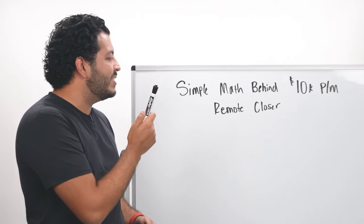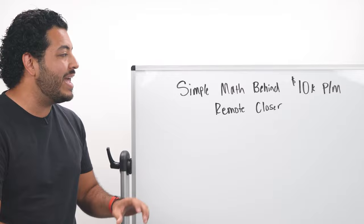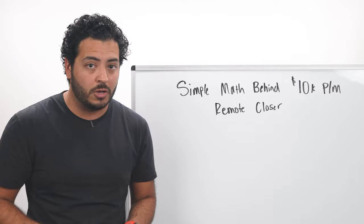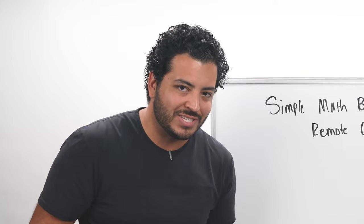What's up guys, in this video we're going to go over the simple math behind a $10,000 a month remote closer and how a couple of small tweaks within these numbers can actually increase that 10k to over $30,000 in take-home commission income for you. So if you want to learn how all that is possible, make sure to stay tuned.